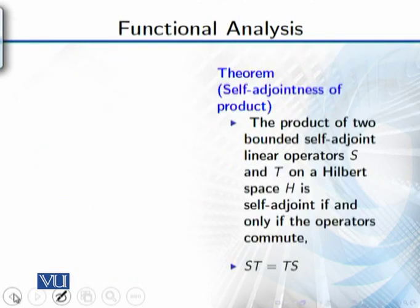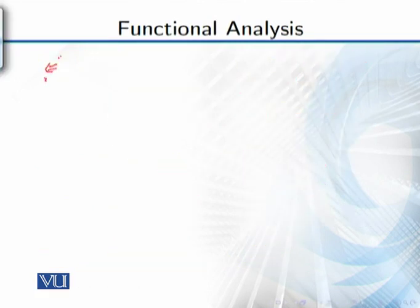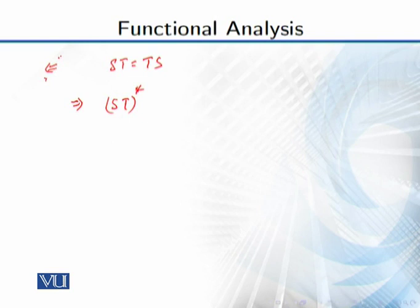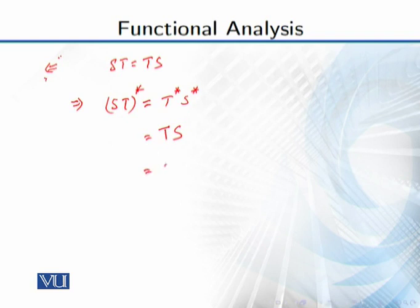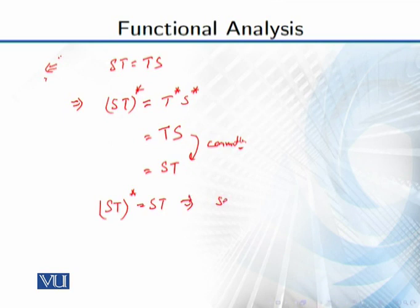Conversely, we suppose that ST = TS. Now we are interested to see what (ST)* is. By definition, (ST)* = T* S*. Since S and T are self-adjoint, T* = T and S* = S, so this equals TS. And since they commute, TS = ST. This implies (ST)* = ST, so ST is self-adjoint.